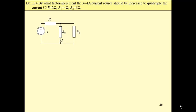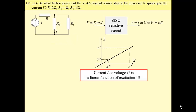So at first, by what factor or increment this source should be increased to quadruple current that flows through R sub 2? So we have a single input, single output resistive circuit, one input current source, one output current.